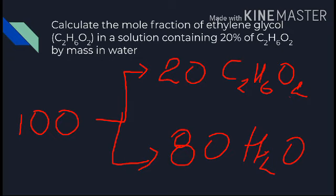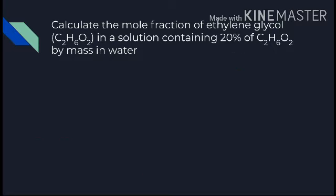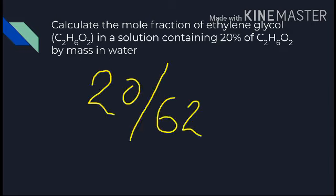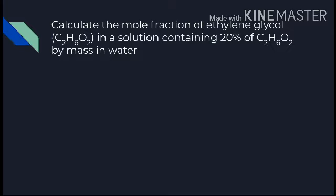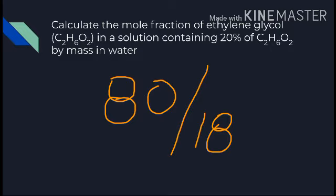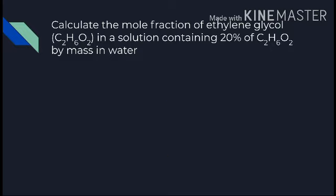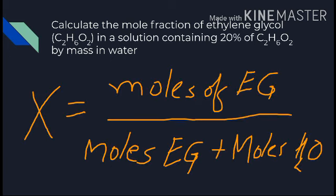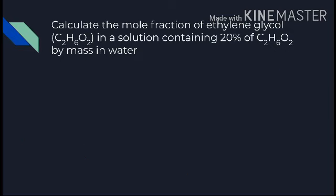So 80 grams is the given mass of water and 20 grams is the given mass of ethylene glycol. Molar mass of ethylene glycol (C₂H₆O₂): 2 carbon atoms, 6 hydrogen atoms, 2 oxygen atoms — total molar mass is 62. Number of moles of ethylene glycol = 20 / 62. Number of moles of water = 80 / 18. Now put all values into the mole fraction formula: mole fraction of ethylene glycol = moles of ethylene glycol / (moles of ethylene glycol + moles of water). Solve to get the answer.